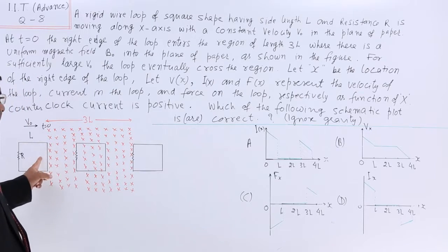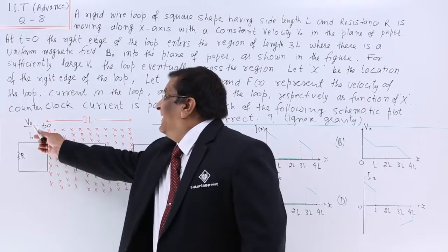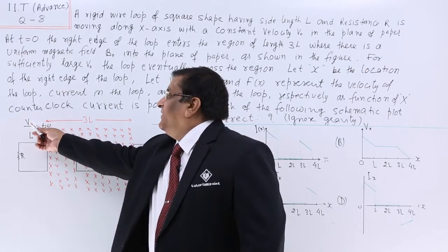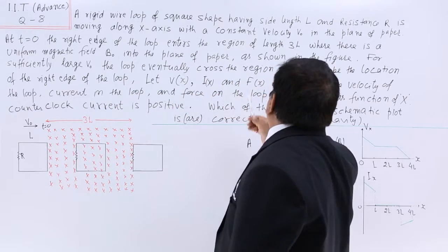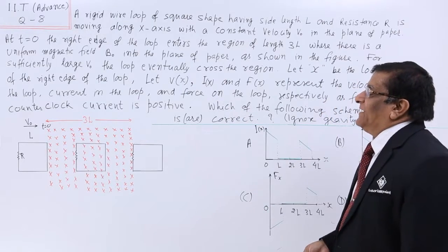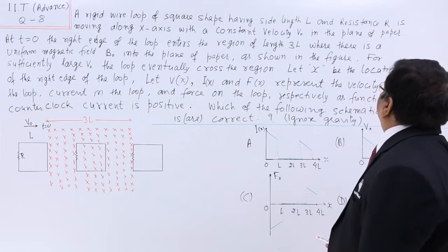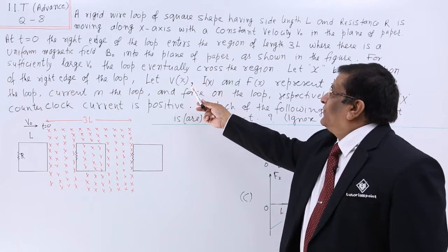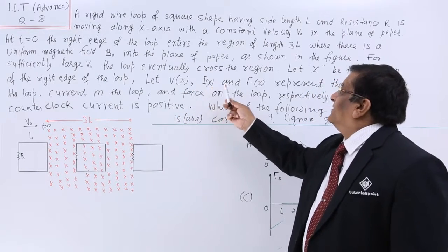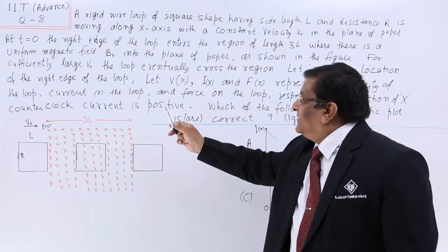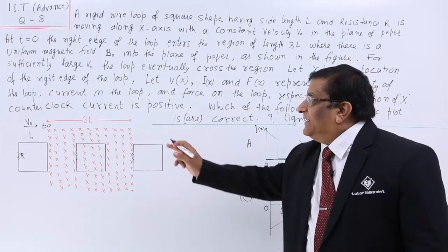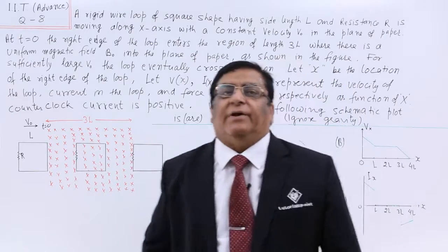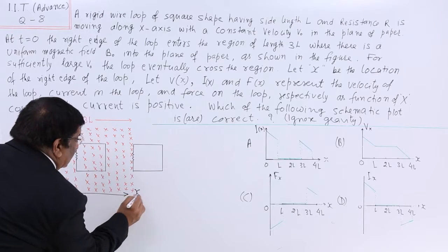When it enters, there may be a force acting on it which will oppose its motion. Because of that opposition, the velocity will get retarded. But V0 is so high that eventually the loop is able to cross the region. Let X be the location of the right edge of the loop, and let velocity Vx, current I, and force Fx represent the velocity, current in the loop, and force on the loop as functions of X. The loop is moving in the direction of X.